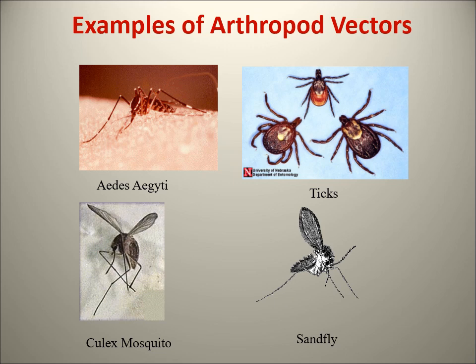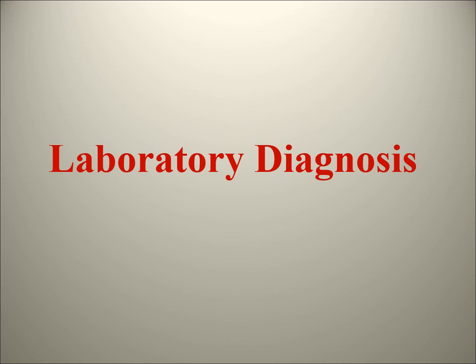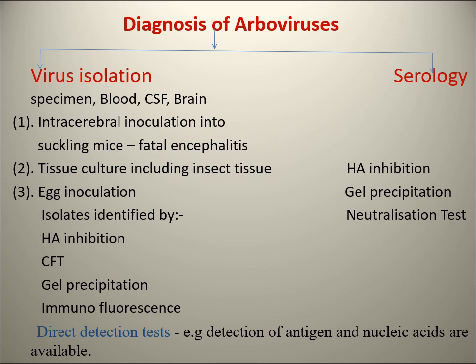Diagnosis of arboviruses: two approaches - isolation and direct diagnosis. Isolation is usually not done for diagnosis because it is a cumbersome process; it is mainly for research purposes, like developing vaccines or conducting research in that area.